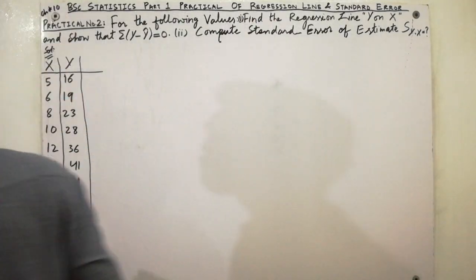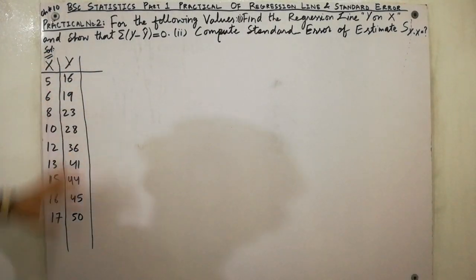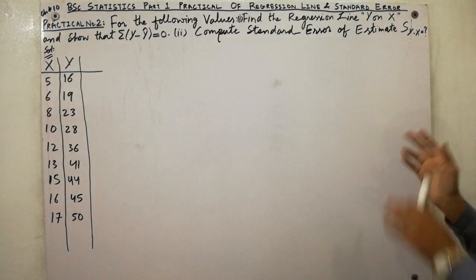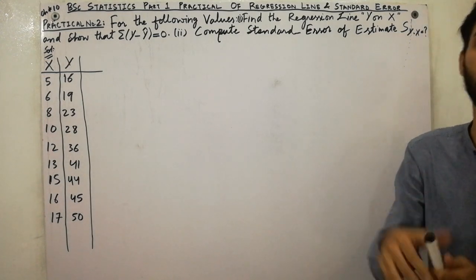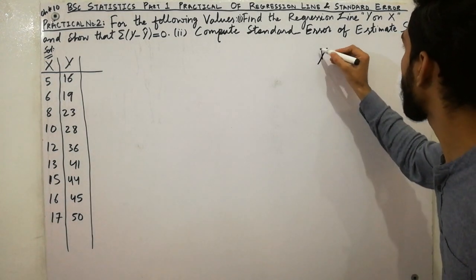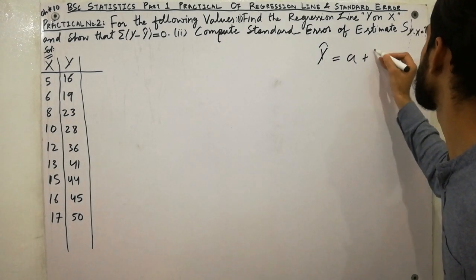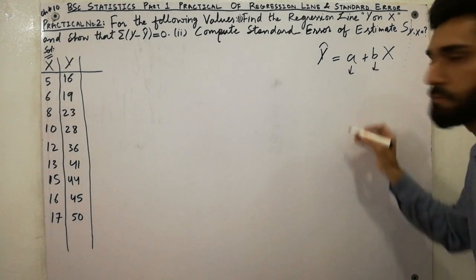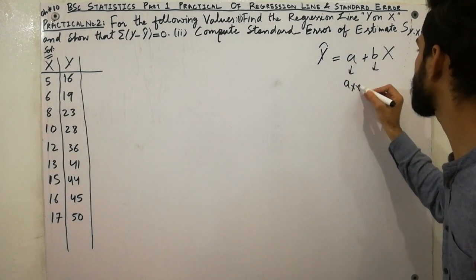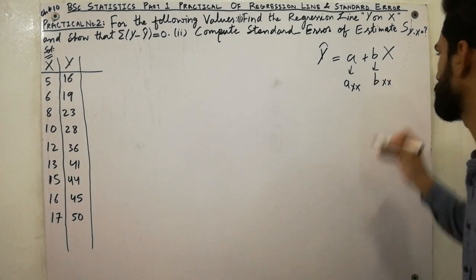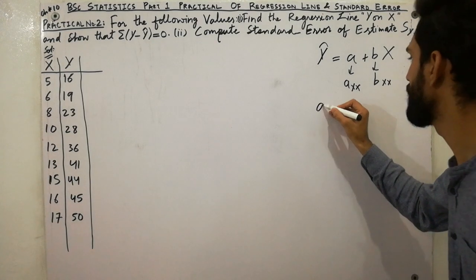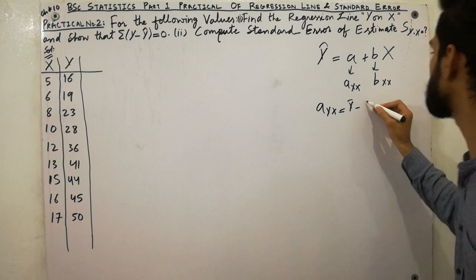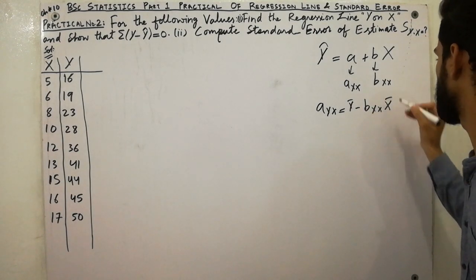Let's start the lecture. The data with x and y values is already given. First, calculate the regression line — I have already discussed this in my last lecture. The regression line is ŷ = a + bx. The formula for a(y.x) is: a(y.x) = ȳ − b(y.x) · x̄.